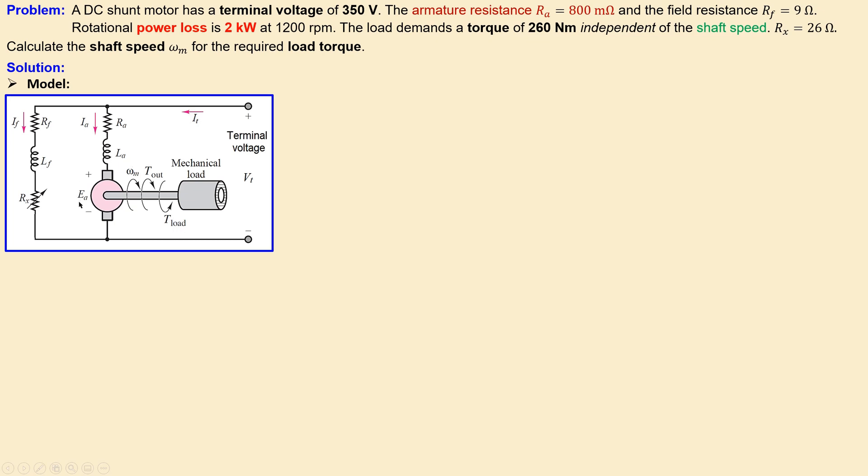The developed torque by the back EMF will be a little bit larger because you have rotational losses. What we have is this magnetization curve, you can see the field current and also the back EMF voltage for a specific rotation speed, and we need this to determine some parameters.